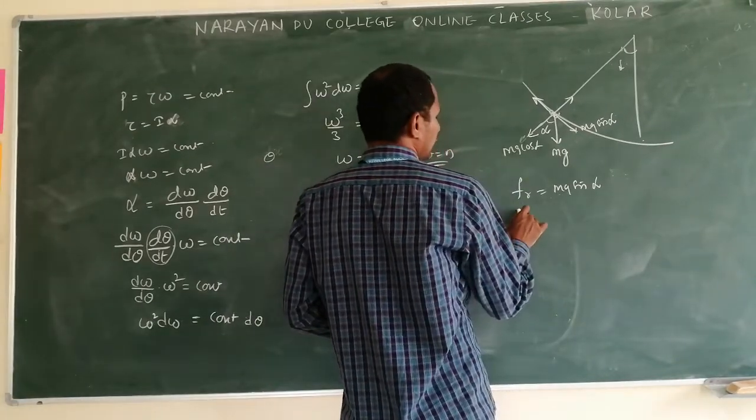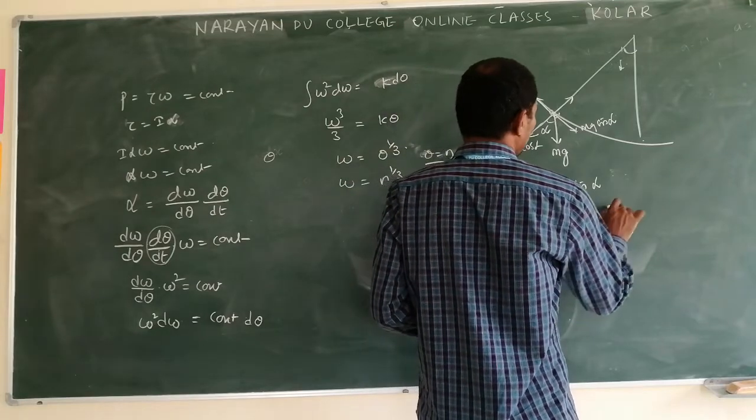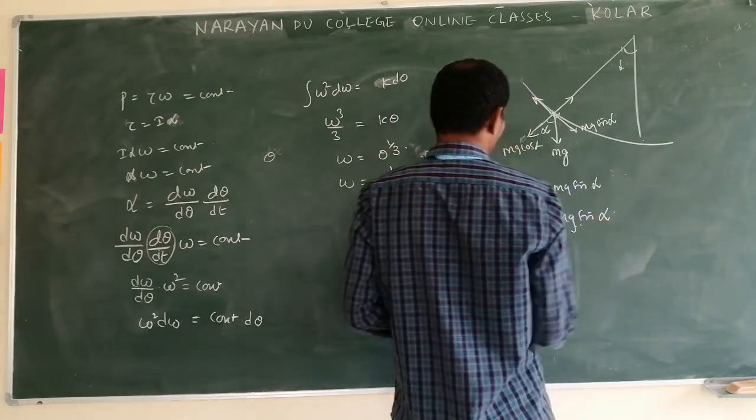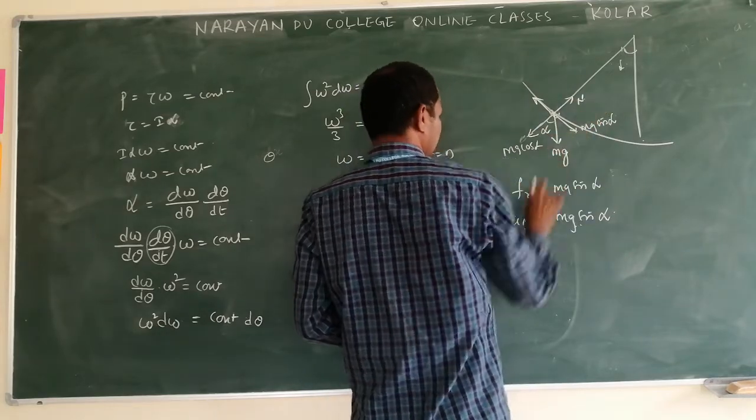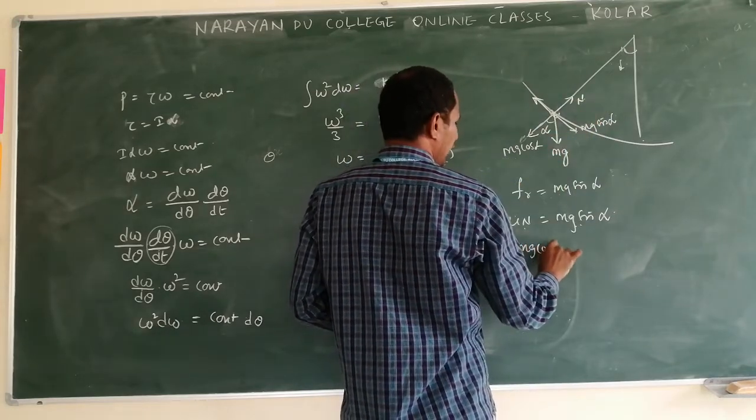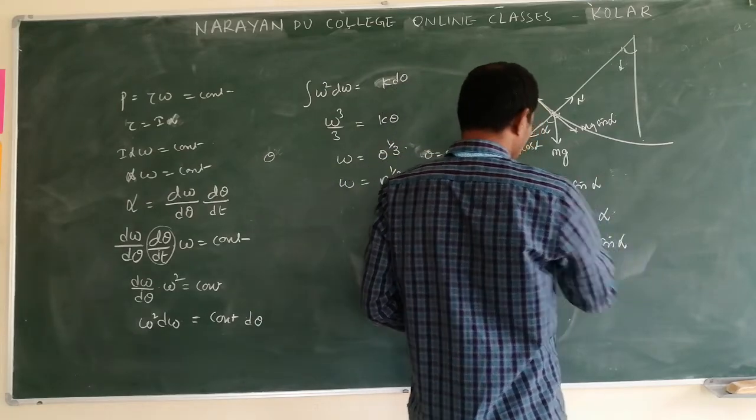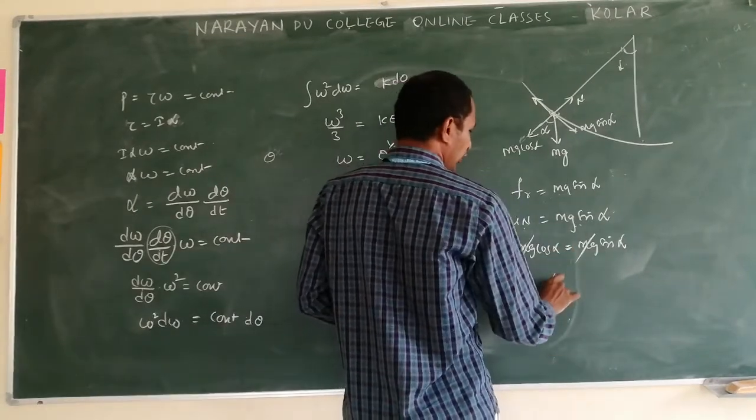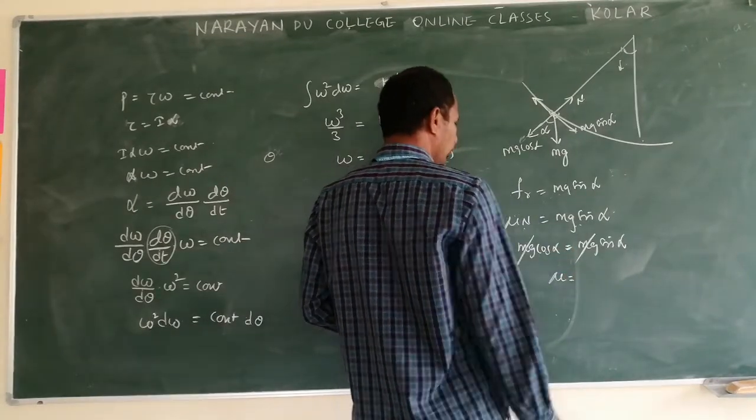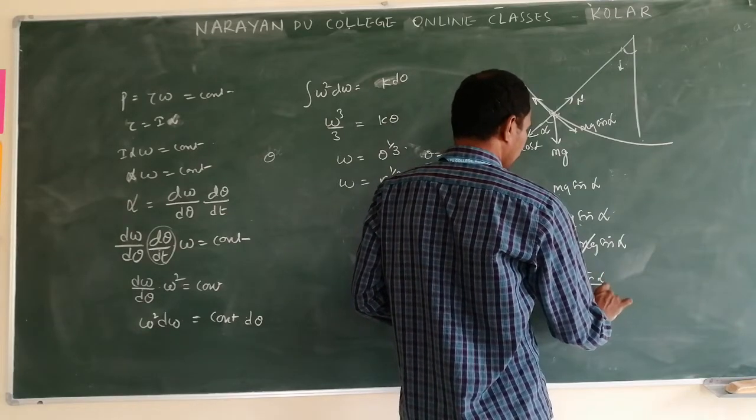Friction how do we write? Mu into n is equal to mg sin alpha. Mu is given. N is what? N is balanced with mg cos alpha is equal to mg sin alpha. Mg, mg cancel.